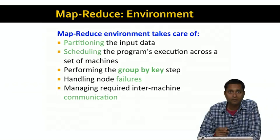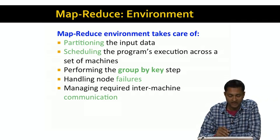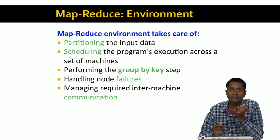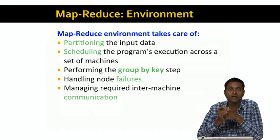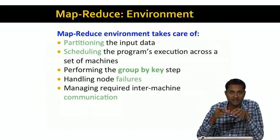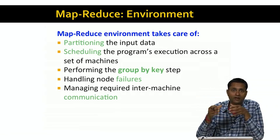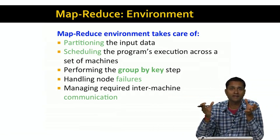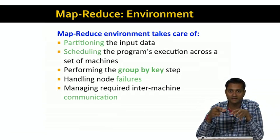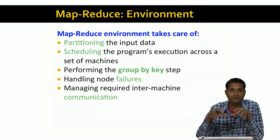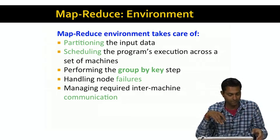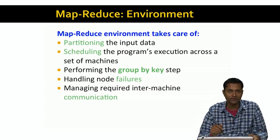The programmer provides two functions — map and reduce — and specifies the input file. The MapReduce environment takes care of a bunch of things: it partitions the input data, schedules the program's execution on a set of machines, figures out where the map tasks run and where the reduce tasks run. It performs the intermediate group-by step. While all this is going on, some nodes may fail, and the environment makes sure that node failures are hidden from the program. Finally, the MapReduce environment also manages all the required inter-machine communication.